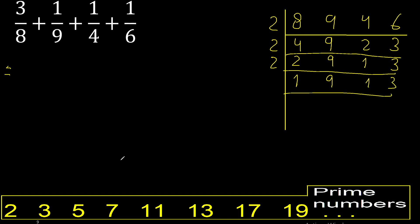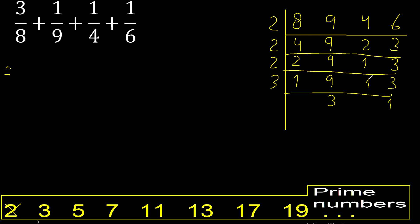Cannot be divided by 2. Divided by 3, yes. Divided by 3 is 3, divided by 3 is 1, okay: 1, 1. Can be divided by 3, divided by 3 is 1.